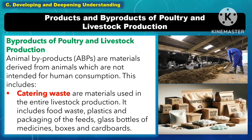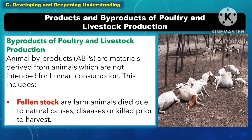Another byproduct of poultry and livestock production is catering waste. These are materials used in the entire livestock production process, including food waste, plastics, and packaging of feeds, glass bottles of medicines, boxes, and cardboards. Another byproduct is fallen stock — these are farm animals that died due to natural causes, diseases, or were killed prior to harvest.